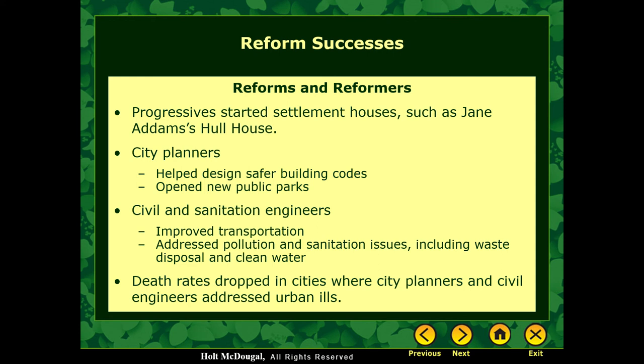Progressives also started settlement houses, such as Jane Addams' Hull House. Progressive city planners designed safer building codes and opened new public parks. Civil and sanitation engineers improved transportation in cities and addressed pollution and sanitation issues — most specifically getting rid of waste and providing access to clean water. Most tenement houses didn't have access to clean water or plumbing — no toilets, so residents just threw waste out the window. Where these city planners and engineers addressed these issues, you see huge drops in death rates.